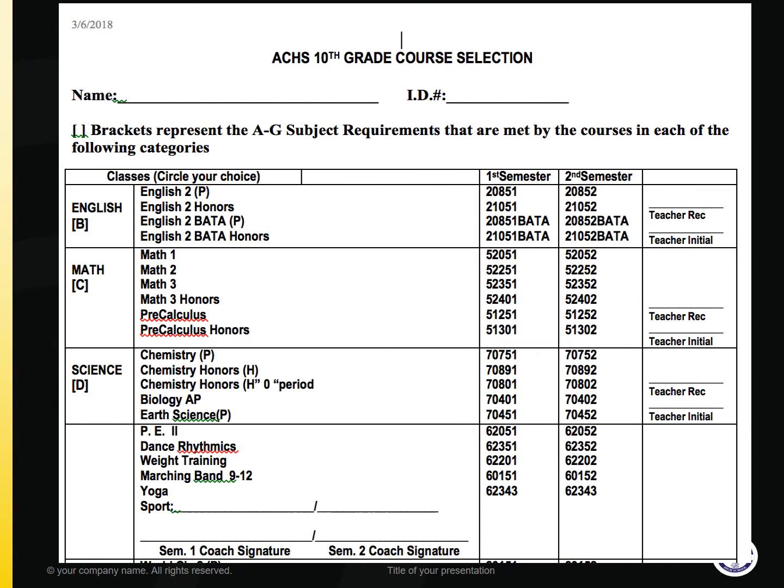This slide reviews the course selection form, which you will use to select your classes for next year. Start with your name at the top and make sure you review this with your parents and have them sign at the bottom. For the first three categories, you will need to get your current teacher's recommendation and signature.